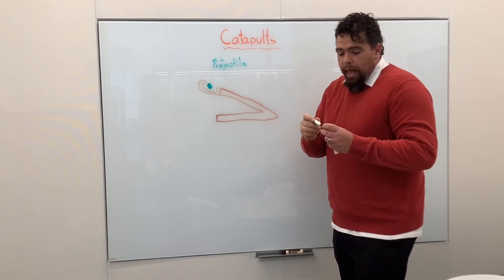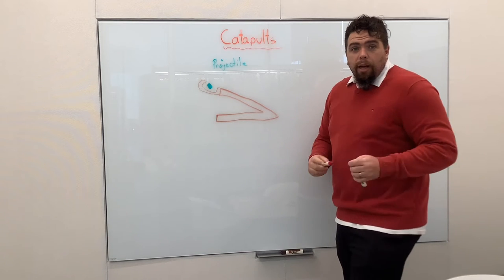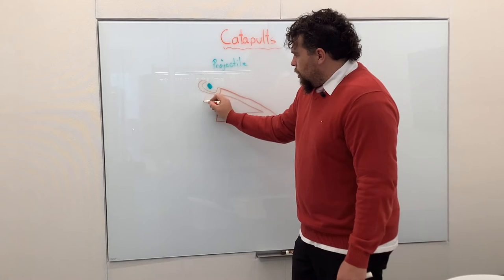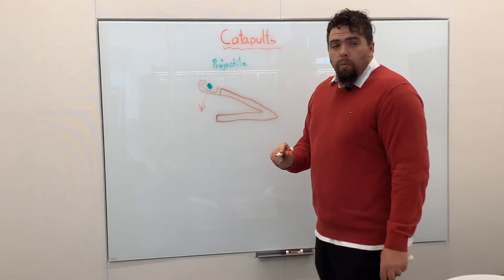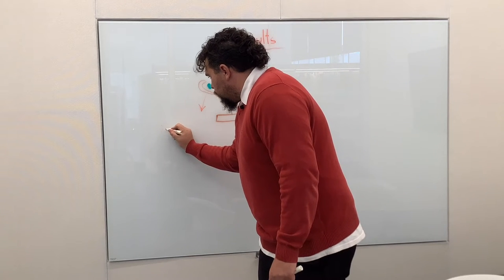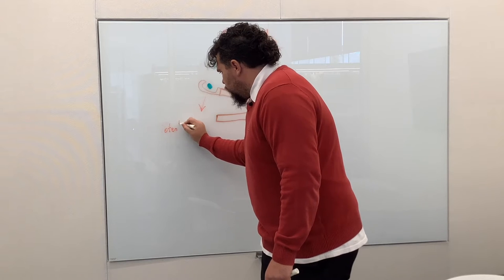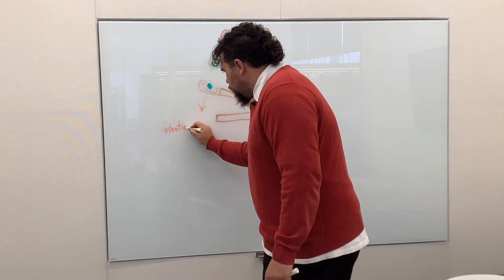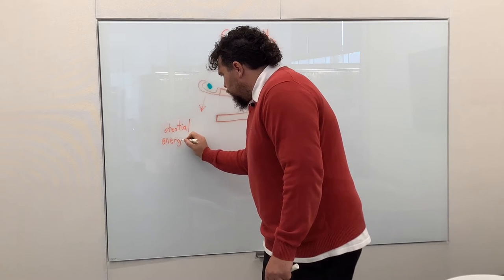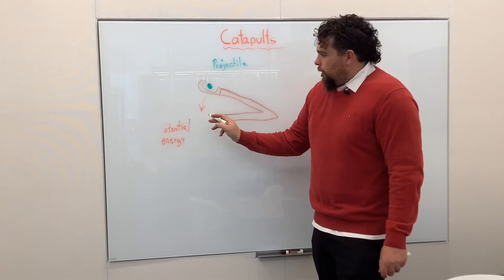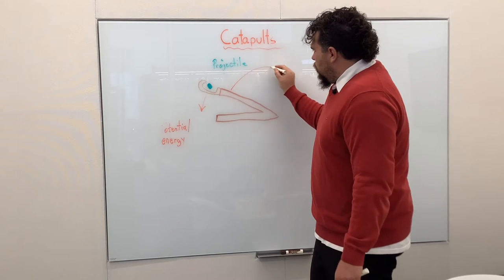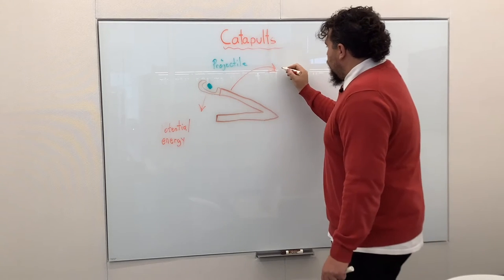When we're working with a catapult, we're really talking about energy. So when we bring down our catapult here, we're going to be creating potential energy. That's going to be our potential energy. And when we release our catapult, that's going to create our kinetic energy.